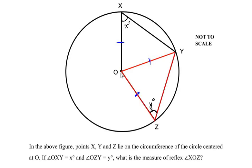Triangle OYZ acts as an isosceles triangle because two sides of the given triangle are the same. So if angle OZY is y degrees, then angle OYZ also becomes y degrees.